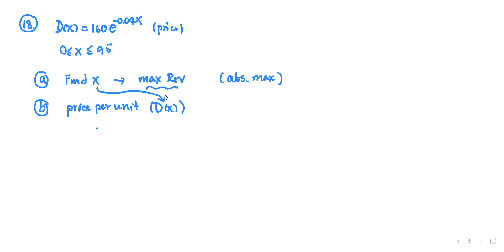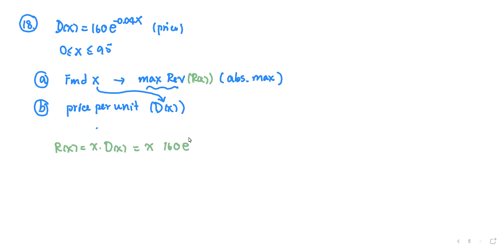Going back to the revenue function: R(x) is x times the demand function. So R(x) equals x times 160 times e to the negative 0.04x, which is 160x·e^(-0.04x).